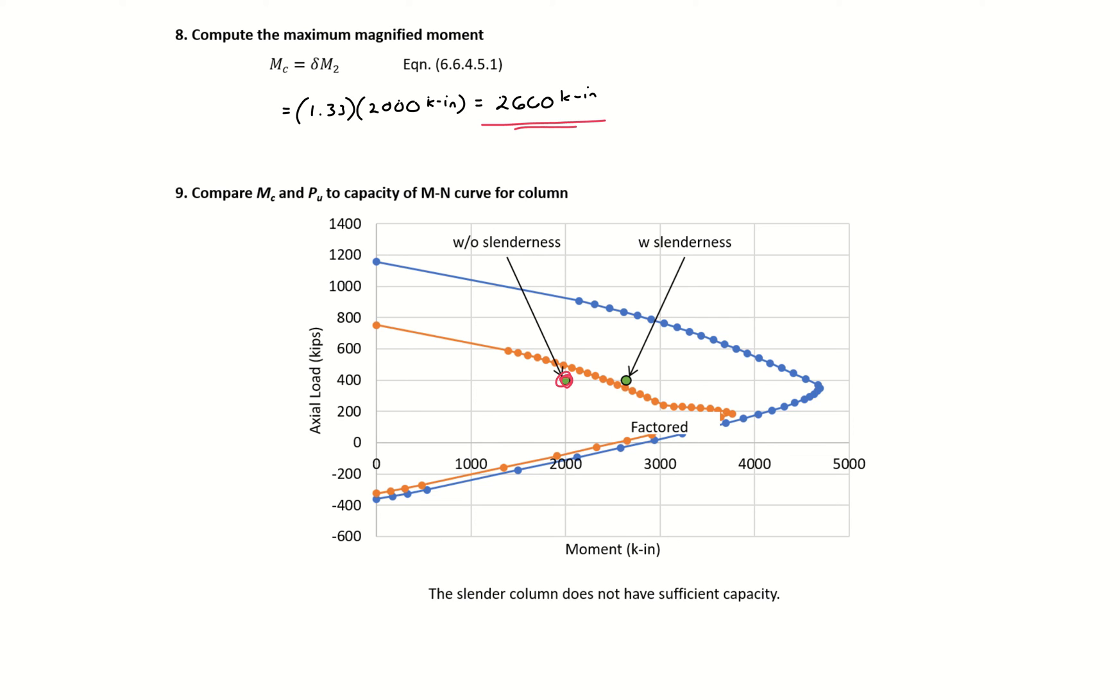When we include slenderness, we're magnifying our moment. You can see with our slenderness effects, our column is no longer sufficient. We are no good. The column doesn't have sufficient capacity when we include slenderness effects.